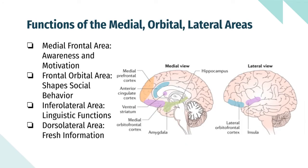Furthermore, the rest of the functions are the lateral, medial, and orbital areas. These include the medial frontal area, the frontal orbital area, the inferolateral area, and the dorsolateral area. The medial frontal area is responsible for awareness and motivation. The frontal orbital area helps shape social behavior. The inferolateral area is responsible for linguistic functions, while the dorsolateral area manages freshly acquired information — therefore it is functionally called working memory. There are many more areas, but these are the important ones.